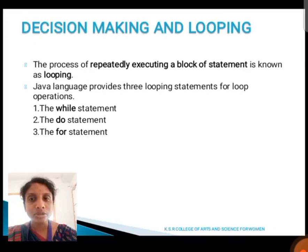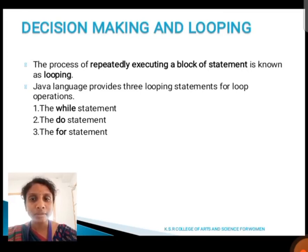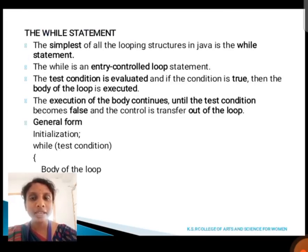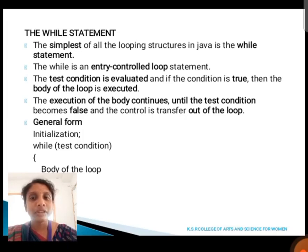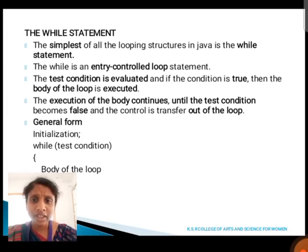Next, we are going to see about decision making and looping. The process of repeatedly executing a block of statements is known as looping. Java language provides three looping statements: the while statement, the do statement, and the for statement. The while statement is the simplest of all looping structures in Java. While is an entry control loop statement — the test condition is evaluated, and if the condition is true, the body of the loop is executed. Execution continues until the test condition becomes false, and then control is transferred out of the loop.